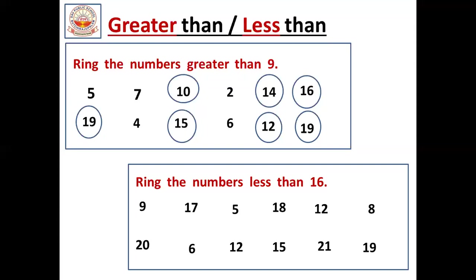We should circle the numbers which are small compared to 16. Is it clear? Small numbers we should circle here, compared to which number? 16. See here: first one is 9. Is 9 a small number or big number compared to 16? It is a small number, so we should circle it. 9 is less than 16. Now 17 — is 17 a big number or small number compared to 16? 17 is a big number, so we should not circle it.